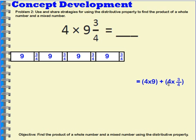And when I multiply four times three-fourths, well, I multiply my whole number by the numerator and I get twelve and they would be fourths. Four times three is twelve. Four times three-fourths is twelve-fourths.